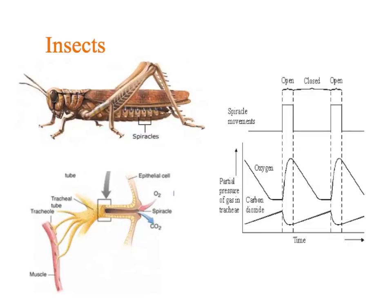Insects can never grow beyond about the size of your hand. The reason is they do not have a particularly well-adapted gas exchange system, and they also struggle with water loss. The only real way insects are adapted for exchange is making the most of maintaining a high concentration gradient. The muscles carrying out respiration keeps the concentration of oxygen low inside the insect, so oxygen moves from a high concentration in the air, through the spiracle, through the trachea, through the tracheoles, to the muscle cells, where it diffuses in.